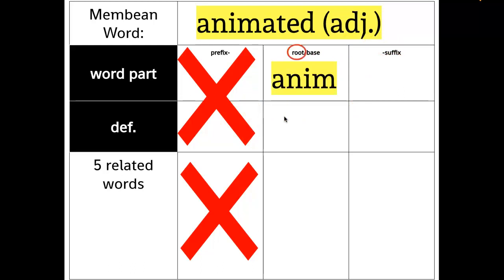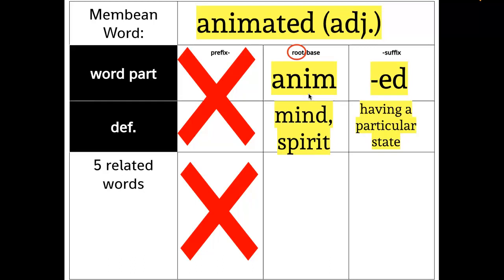So anim is a root. It's not a word by itself. And it means mind or spirit. And the suffix, ed, means having a particular state.